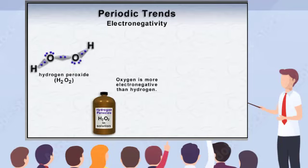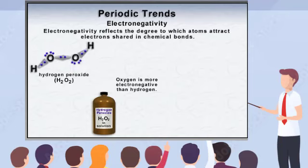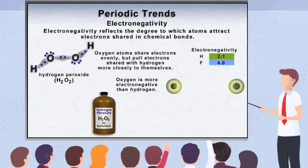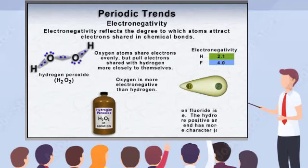Another trend the periodic table reflects is electronegativity. An element's electronegativity pertains to the ability of its atoms to attract electrons shared in a chemical bond. When atoms combine or form a bond, they often transfer electrons or share electrons with one another. More electronegative atoms tend to attract electrons toward their end of the bond more strongly than less electronegative atoms. For example, in the compound hydrogen fluoride, the fluorine atom is much more electronegative than the hydrogen atom, resulting in the electrons shared in the bond being pulled more closely toward the fluorine atom.